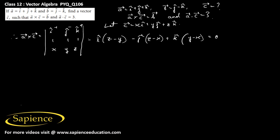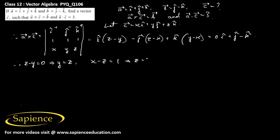This equals b, which is 0î + ĵ - k̂. Comparing both sides: z - y = 0, which implies y = z; x - z = 1, so z = x - 1; and y - x = -1, which means y = x - 1.